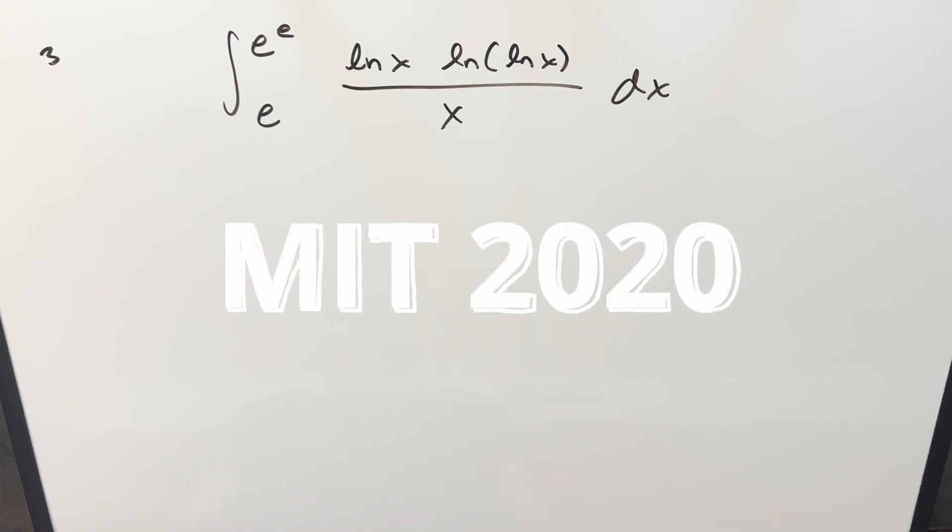Okay, we have here another integral from the MIT integration bee 2020 number 3. We have the integral from e to e^e of ln x · ln(ln x) over x dx.